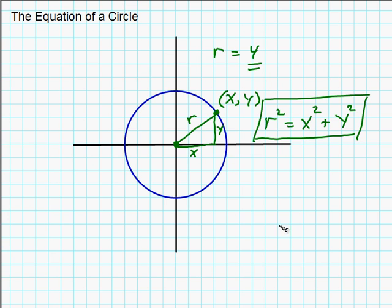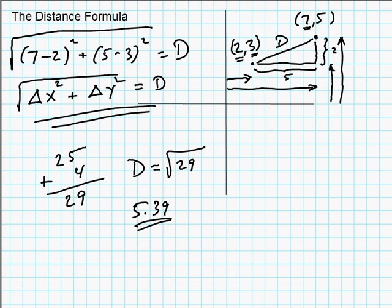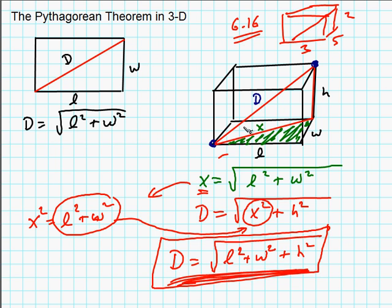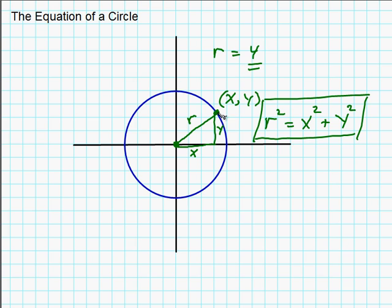So we found three different extensions, or if you want to call them applications, of the Pythagorean theorem. Here we have the distance formula. We have an extension of the Pythagorean theorem into three dimensions. And now we found how to use distance as a way of defining curves that we can put on graphs, in this case, a circle.